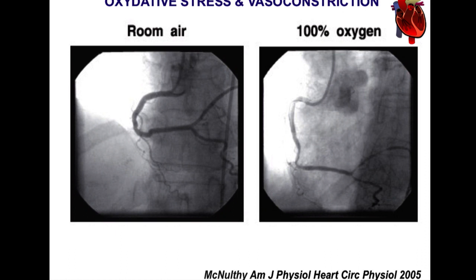This is a very striking image of a patient undergoing angioplasty. On the left side, you can see the left coronary has been revascularized and flow is restored. On the right side, the patient was given 100% oxygen — and immediately, this real image shows coronary vasoconstriction, a very strict vasoconstriction occurring just from administering 100% oxygen.